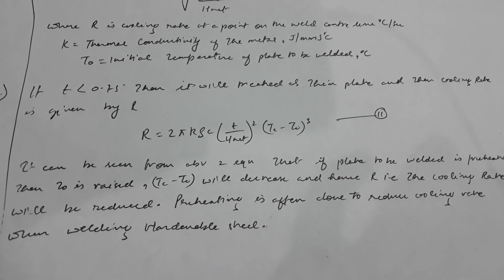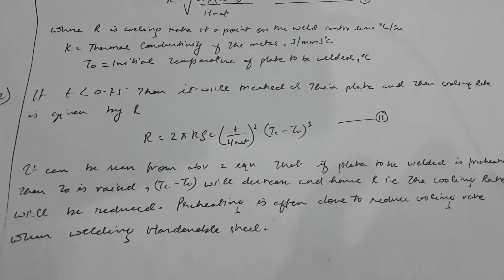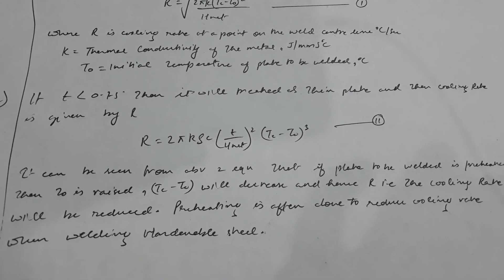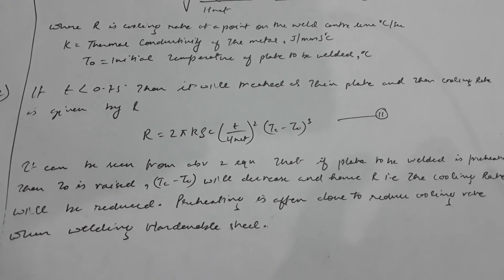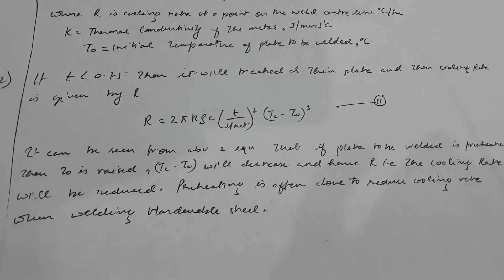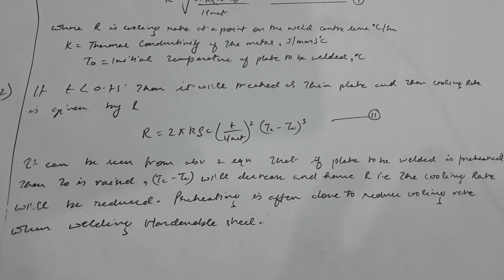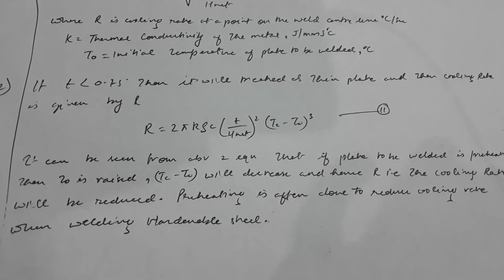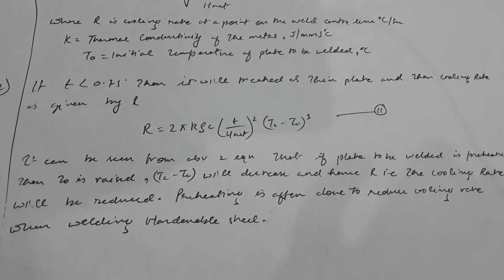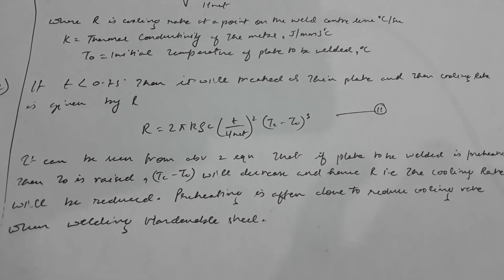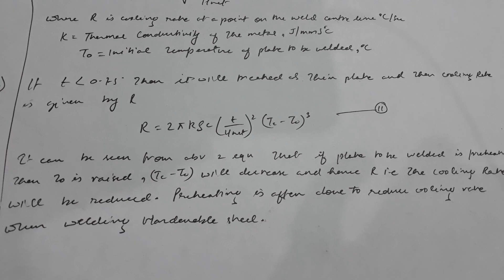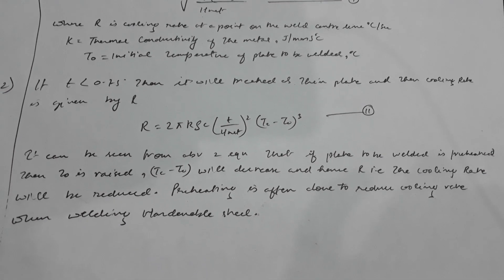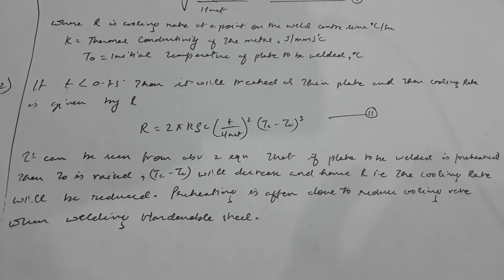And if t1 is less than 0.75 times t, then we will treat it as a thin plate. The cooling rate of thin plates is given by R equals 2 pi k rho c t divided by h net squared, times tc minus t0 cubed. It can be seen from the above two equations that if the plate to be welded is preheated, tc minus t0 will decrease.